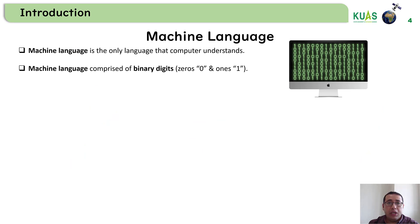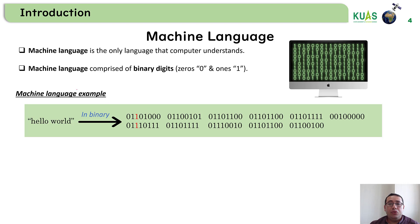The machine language is the only language that computers and machines can understand. Machine language is binary digits — zeros and ones. For example, if we need to say 'hello world' to the PC, how do we represent that in binary digits? In binary digits, you can see a sequence of zeros and ones. All these numbers represent the letter H in the word 'hello'.